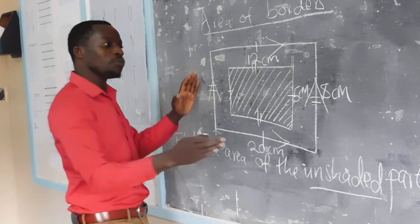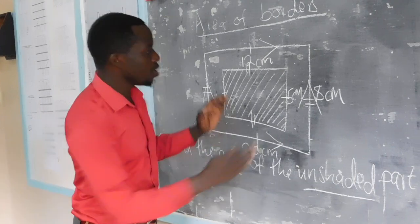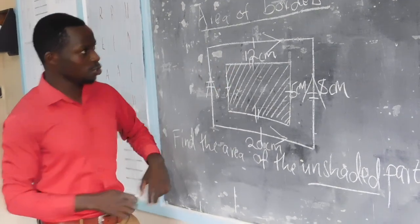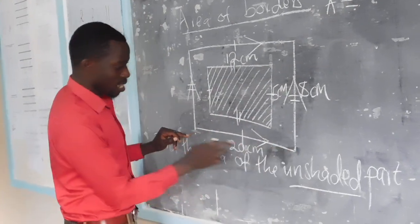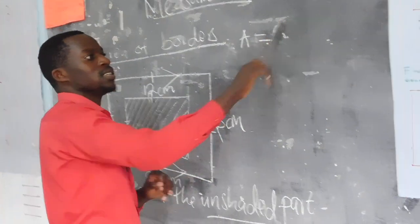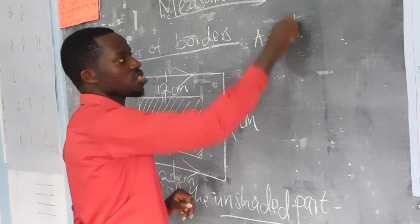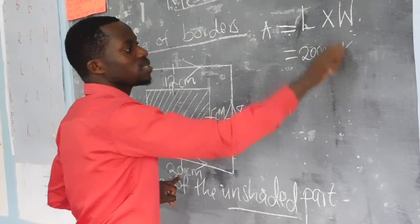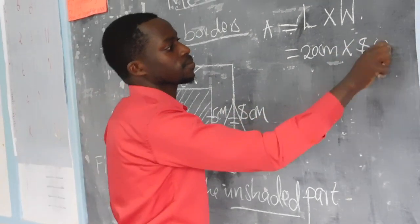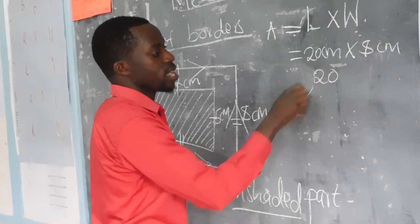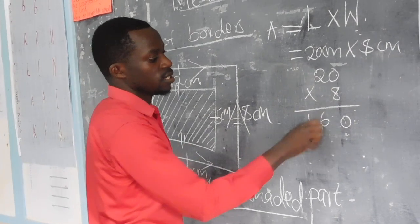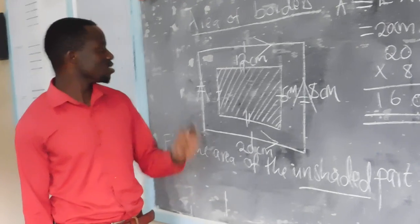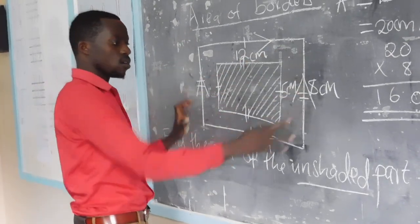It is easy. First, you must work out the area of the bigger rectangle, then calculate the area of the inner smaller rectangle, then find the difference. For the area of the bigger rectangle, the formula is length times width: 20 cm multiplied by 8 cm. That gives us 160 square centimeters — this is the area of the outer rectangle.